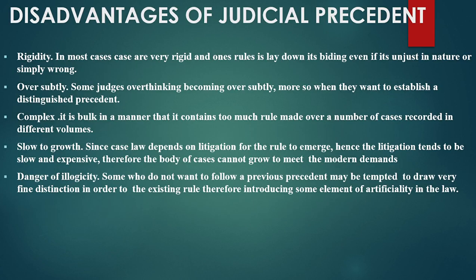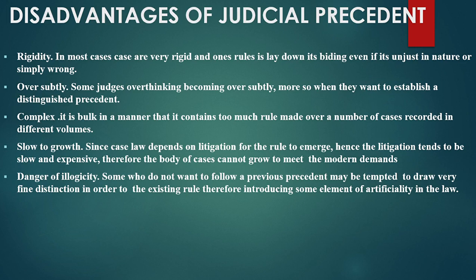Disadvantages of judicial precedent. One of the disadvantages is rigidity. In most cases, rules are very rigid, where once a rule is laid down it is binding even if unjust in nature or simply wrong. Many cases have been recorded in various volumes, and once a precedent is put on the table, it may determine a case that results in injustice. Some judges may become overly subtle when they want to establish a distinguished precedent, which can also resort to injustice.